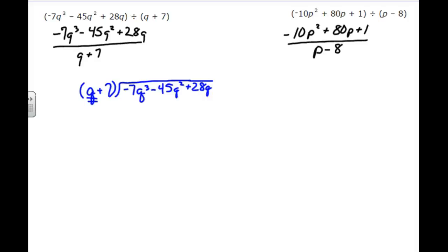So q will go into negative 7q cubed, negative 7q squared times, because 1 goes into negative 7, negative 7 times, and q goes into q cubed, q squared times, because q cubed is q times q times q. And so when you divide it by q, you take one of those q's away and you're left with two q's.